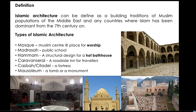Types of Islamic architecture include: mosque, madrasa, hammam, caravanserai, kasbah or citadel, and mausoleum.